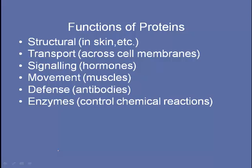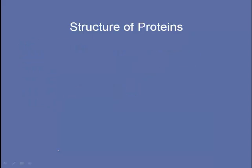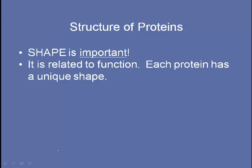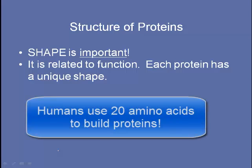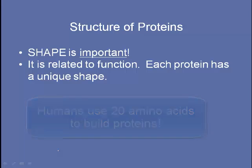Proteins have many different functions. The structure of proteins is what enables them to have so many various different jobs. Shape is really important — it's completely related to their function. Each protein has its own unique shape, and that's made possible by all the variations of the subunits that make up protein. Proteins are made of amino acids, but there are many amino acids, and so the combinations are pretty astronomical.